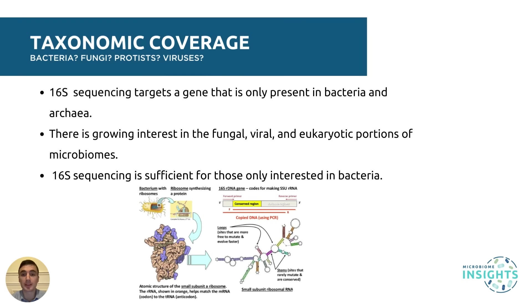Taxonomic coverage is also an important consideration. As discussed, 16S sequencing targets a gene that is only present in bacteria and archaea. Although bacteria make up a majority of human microbiomes, there is a growing interest in the fungal, viral, and eukaryotic proportions of human and other microbiomes. If you are only interested in bacteria, 16S gene sequencing is sufficient. However, if you are interested in multiple microbial kingdoms, shotgun metagenomic sequencing will be more suitable. It is important to consider, however, that the ability to identify bacteria, viruses, and eukaryotic microorganisms simultaneously and accurately will strongly depend on the DNA extraction method used on your sample — for example, RNA viruses cannot be detected in a DNA extract — and also on the bioinformatics and pipelines used.